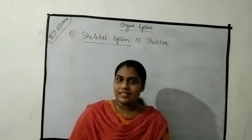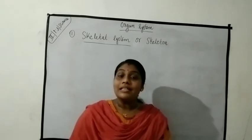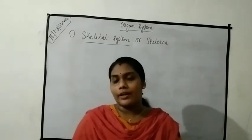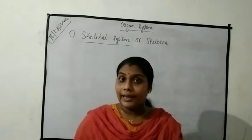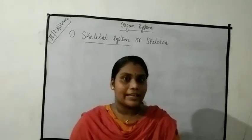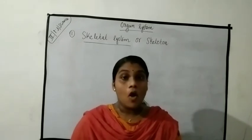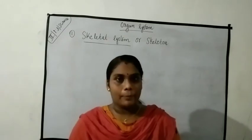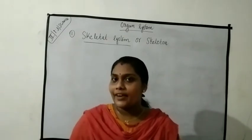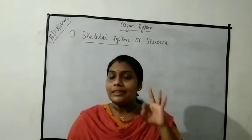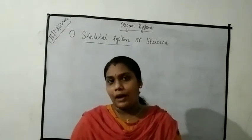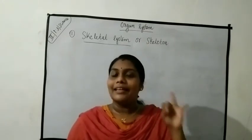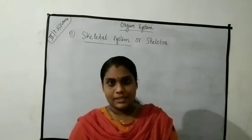In our last class we discussed about how cell creates tissue, tissue creates organ, organ creates organ system, organ system creates the whole human body. And the human body is divided into three main parts: the first one is the head, the trunk, and the limbs.